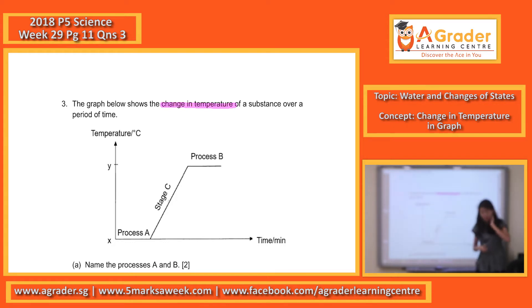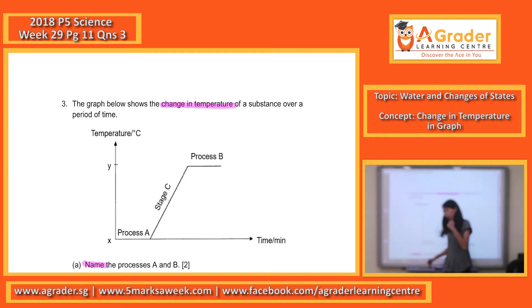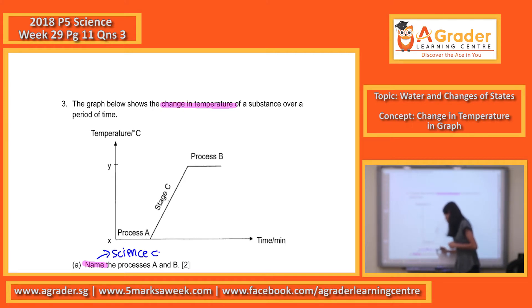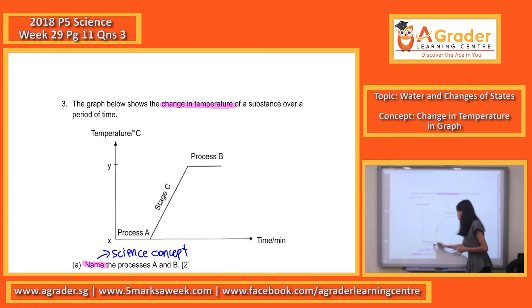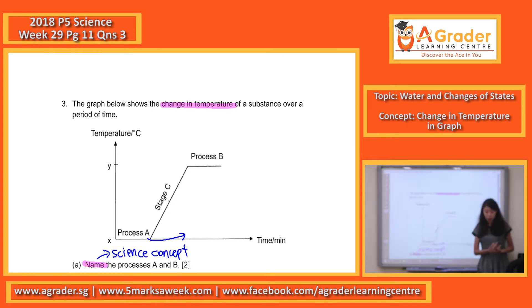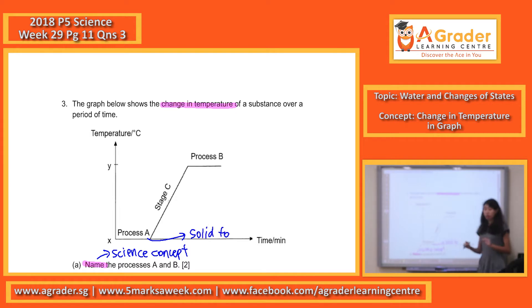Name the processes in A and B. Name means I want a specific science concept — a process, the scientific word that you have learnt in this topic. Based on this, what you want to notice is that process A — always remember the one at the bottom with a constant line. What kind of state would that be? It would be both solid and liquid, but this is when they are changing from a solid to a liquid state.